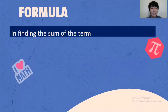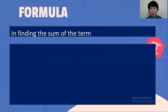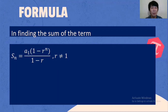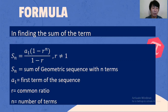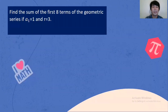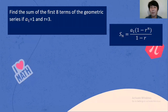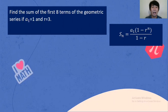We will now move on to finding the sum of the terms. We will use the formula S sub n equals a sub 1 multiplied by the quantity of 1 minus r raised to n, over 1 minus r, where r should not equal 1. S sub n is the sum of the geometric sequence with n terms, a sub 1 is the first term, r is the common ratio, and n is the number of terms. Let's find the sum of the first 8 terms if a sub 1 is 1 and r is 3.